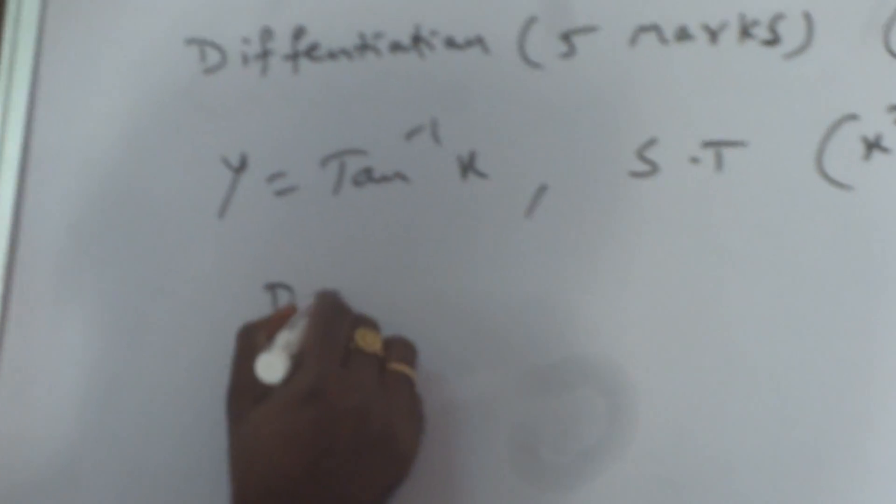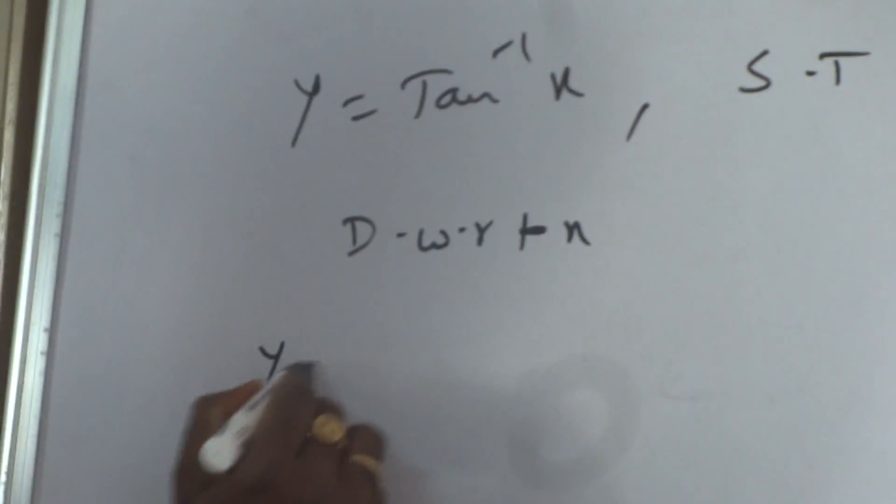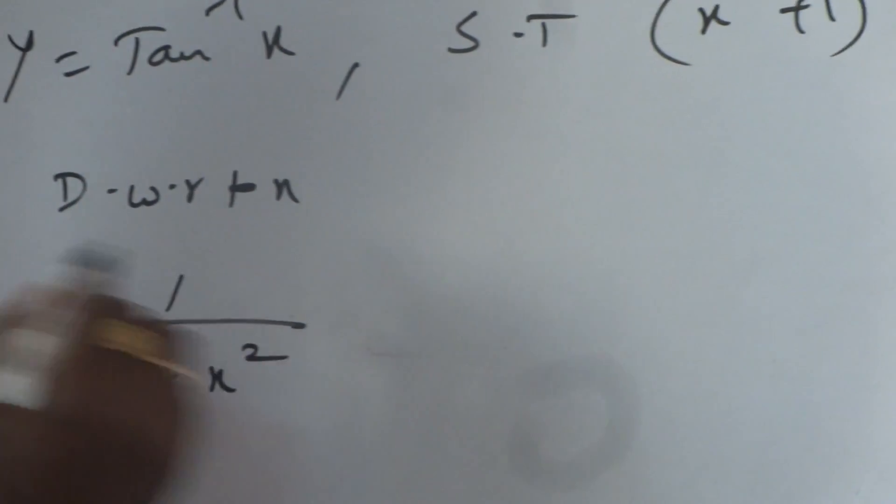Differentiate with respect to x the given function. y1 is equal to 1 divided by 1 plus x squared.